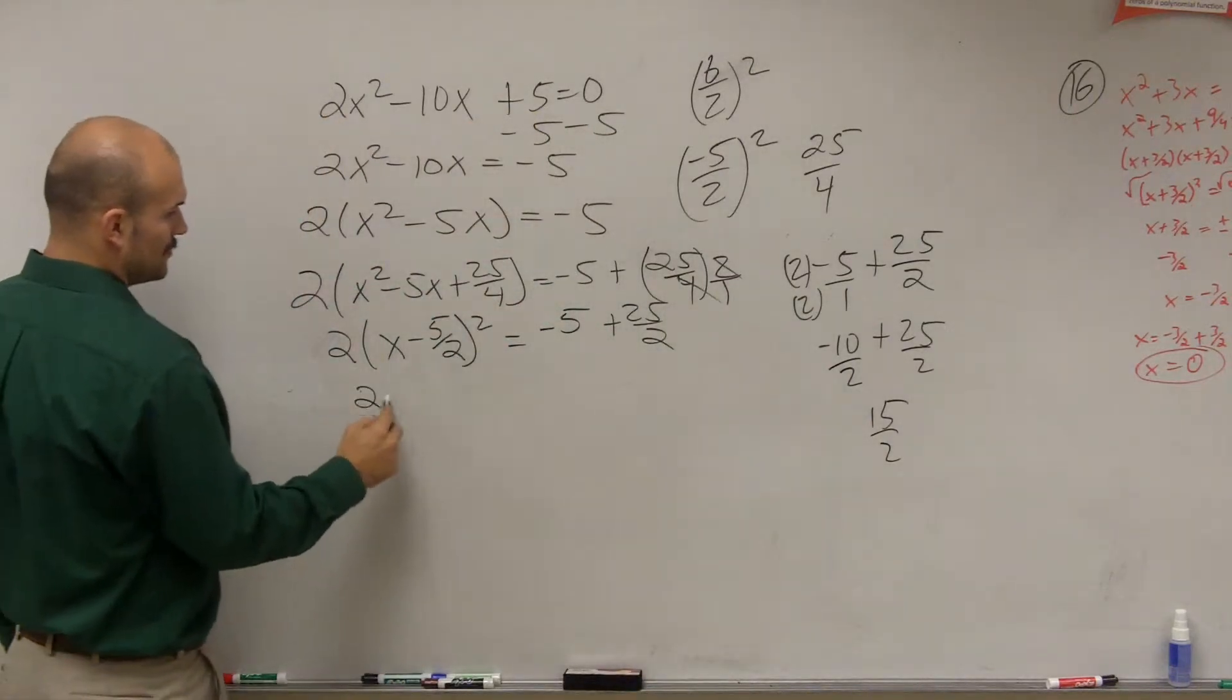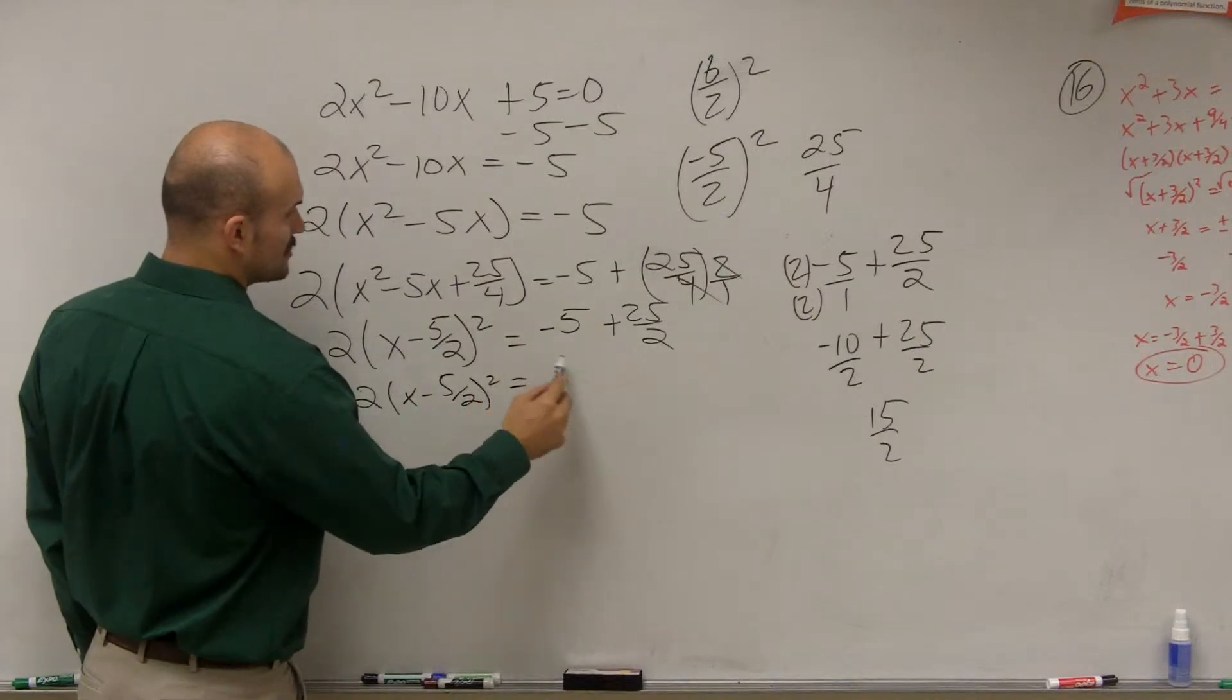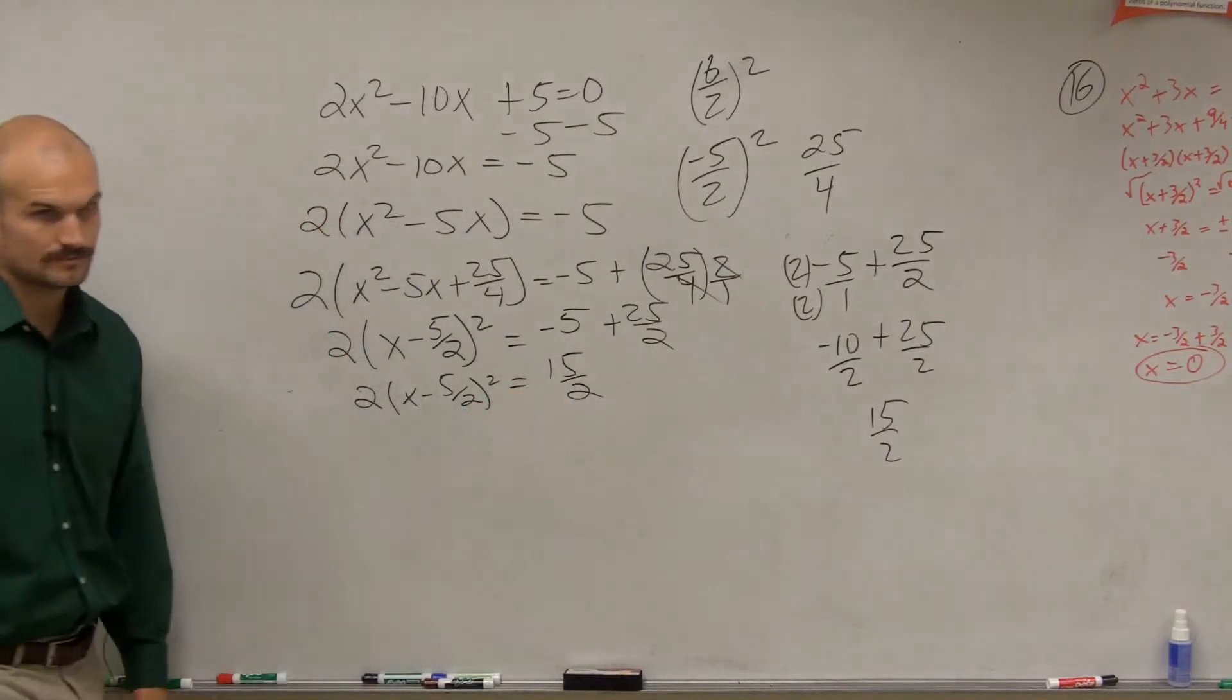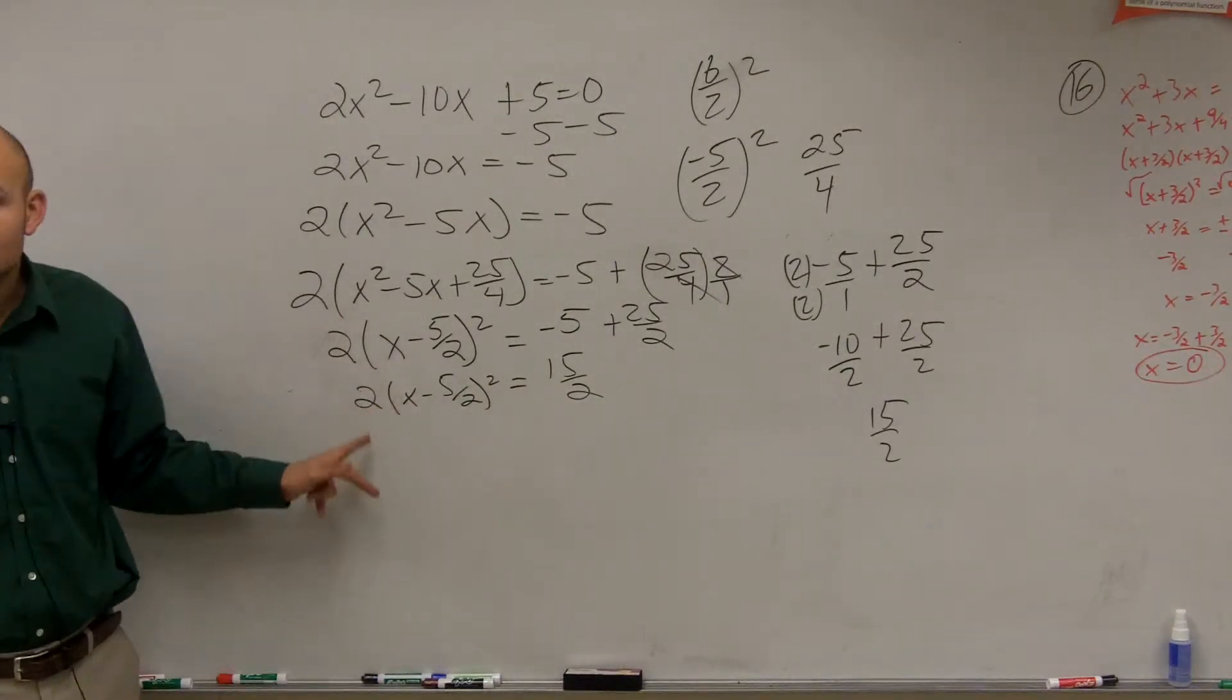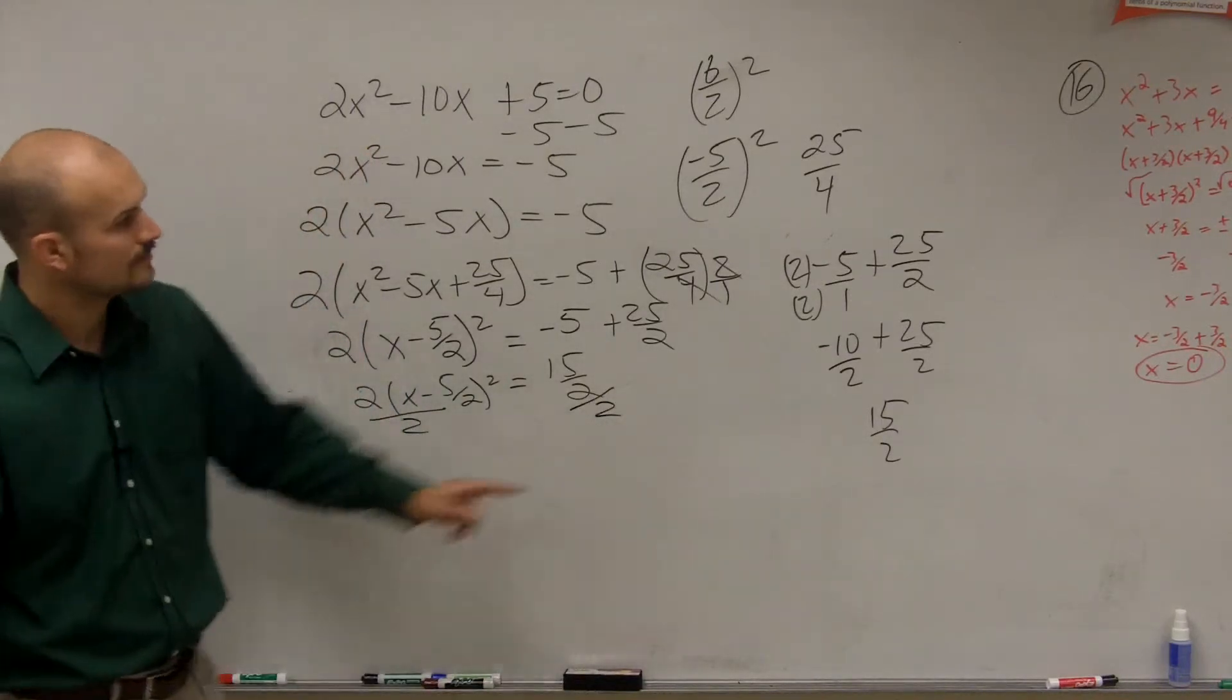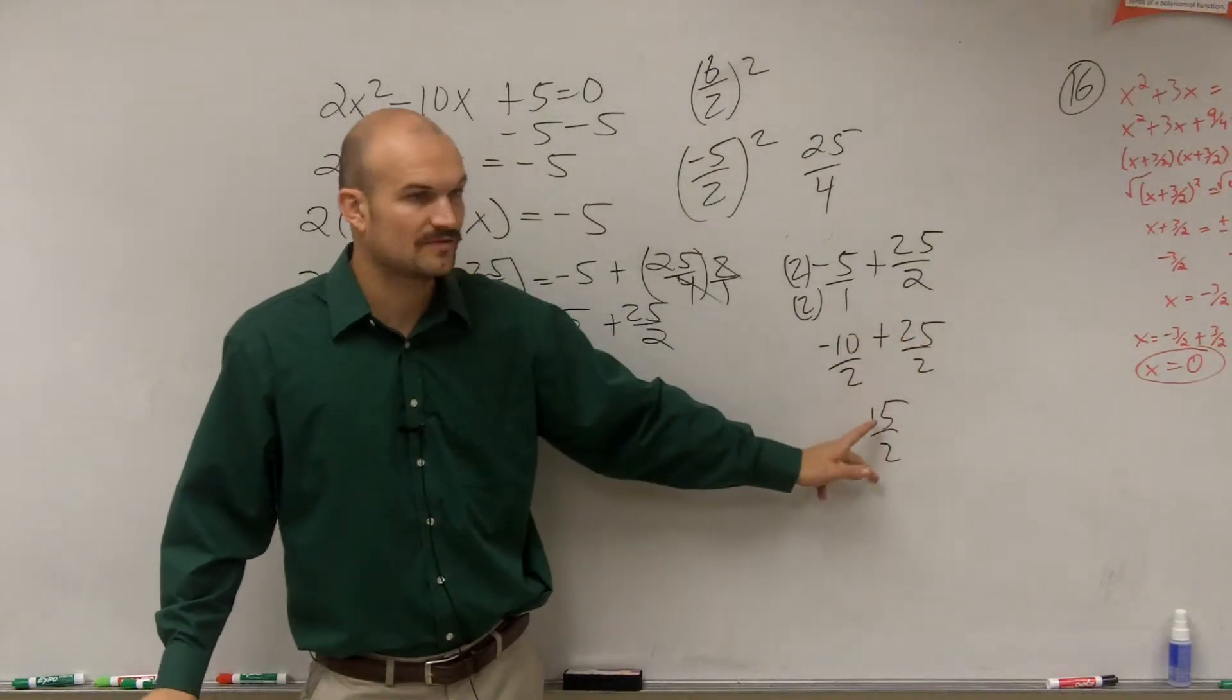So therefore, I'm going to have 2 times x minus 5 halves squared equals 15 divided by 2. So now, what do we do? We need to divide by 2. Negative 10 plus 25 is 15.